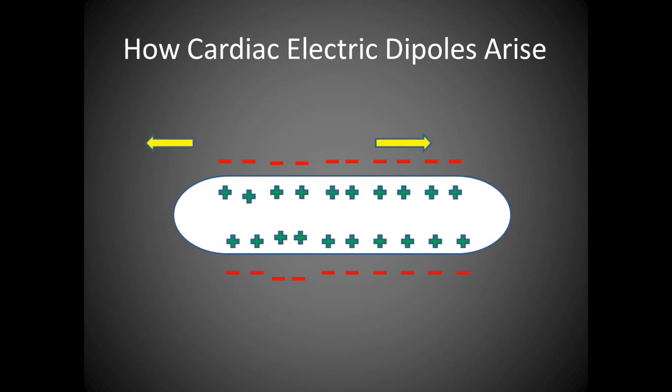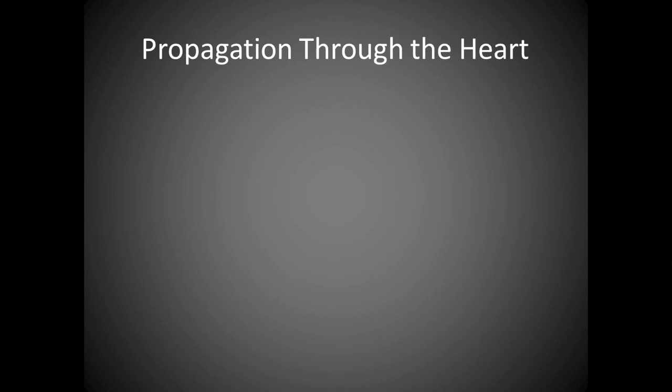If the electric field is recorded by extracellular electrodes, a positive potential will be recorded when the vector points towards the positive electrode. If the vector points toward the negative electrode, a negative potential is recorded. Now that we've seen what happens in a strip of cardiac muscle, the same concept can be applied to the whole heart.